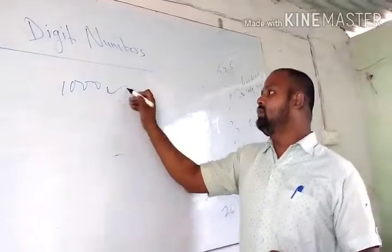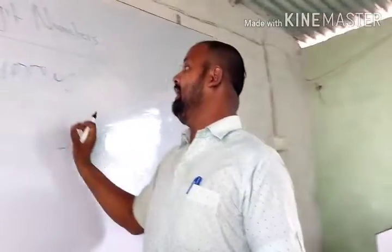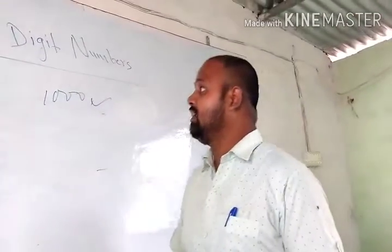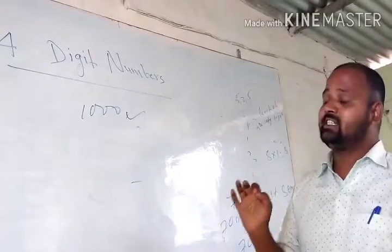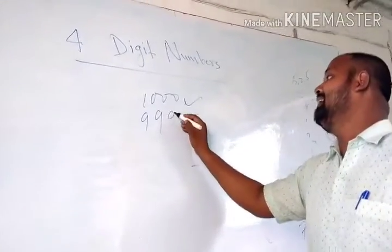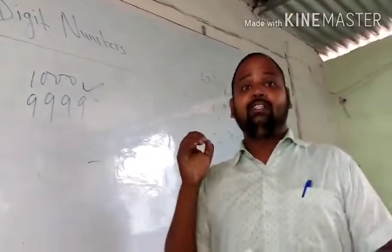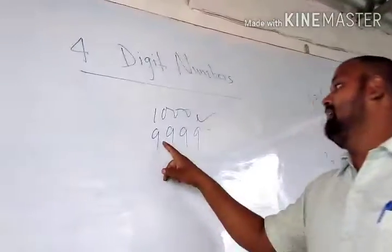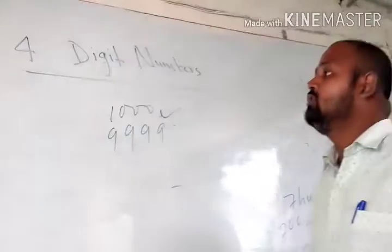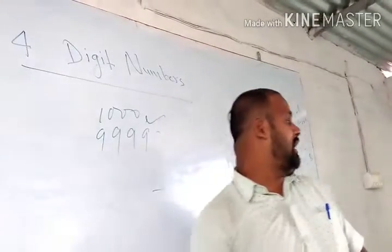1000 is the smallest 4-digit number. And our next question is: which is the largest 4-digit number? 9,999 is our largest 4-digit number.